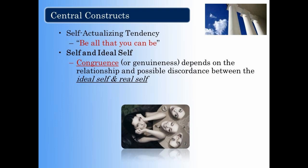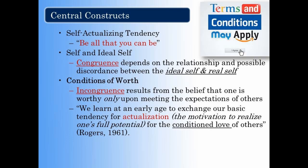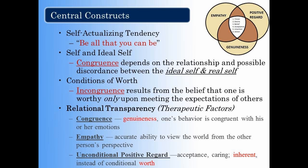This leads us to the third central construct, conditions of worth, in which incongruence results from the belief that one is worthy only upon meeting the expectations of others. Rogers noted that we learn at an early age to exchange our basic tendency for actualization — which can be defined as the motivation to realize one's full potential — for the conditioned love of others. And finally, there's the construct of relational transparency, or essential therapeutic factors. Congruence means genuineness. Empathy is the accurate ability to view the world from the other person's perspective. And unconditional positive regard can be defined as acceptance, caring, and inherent worth, instead of conditional worth.